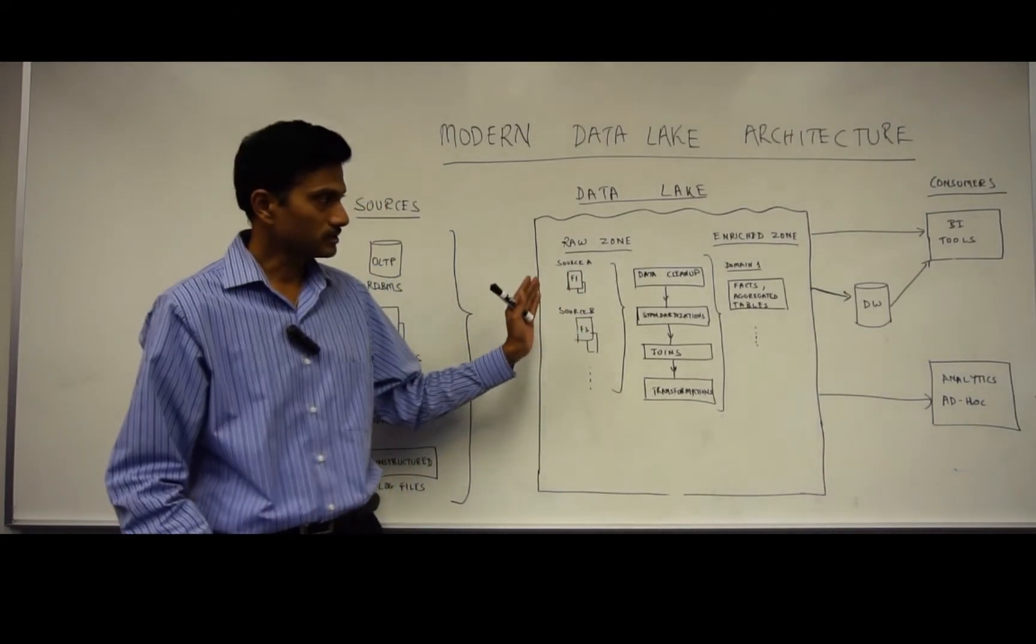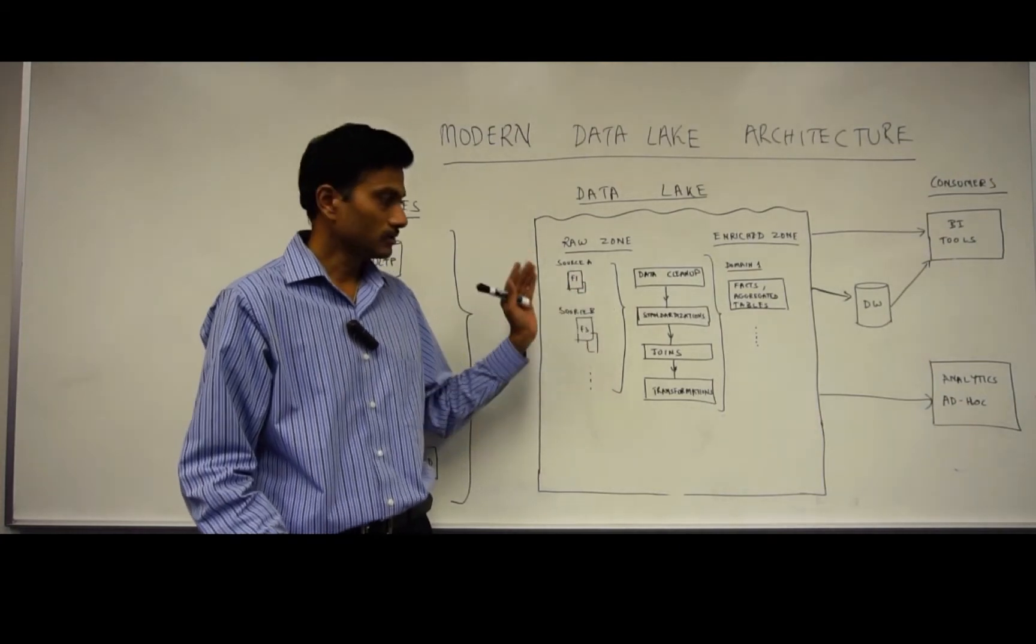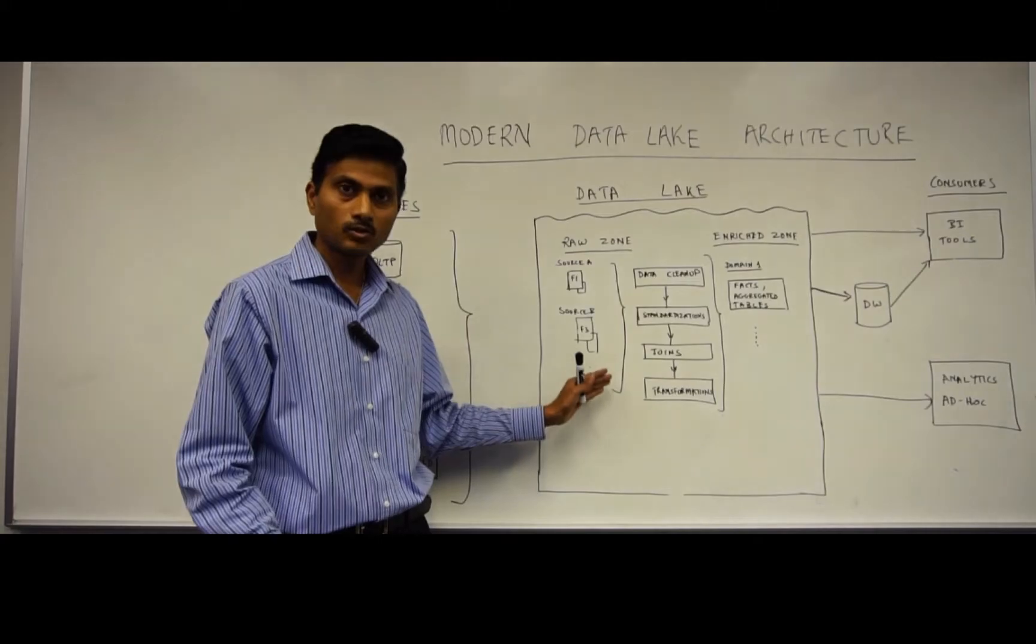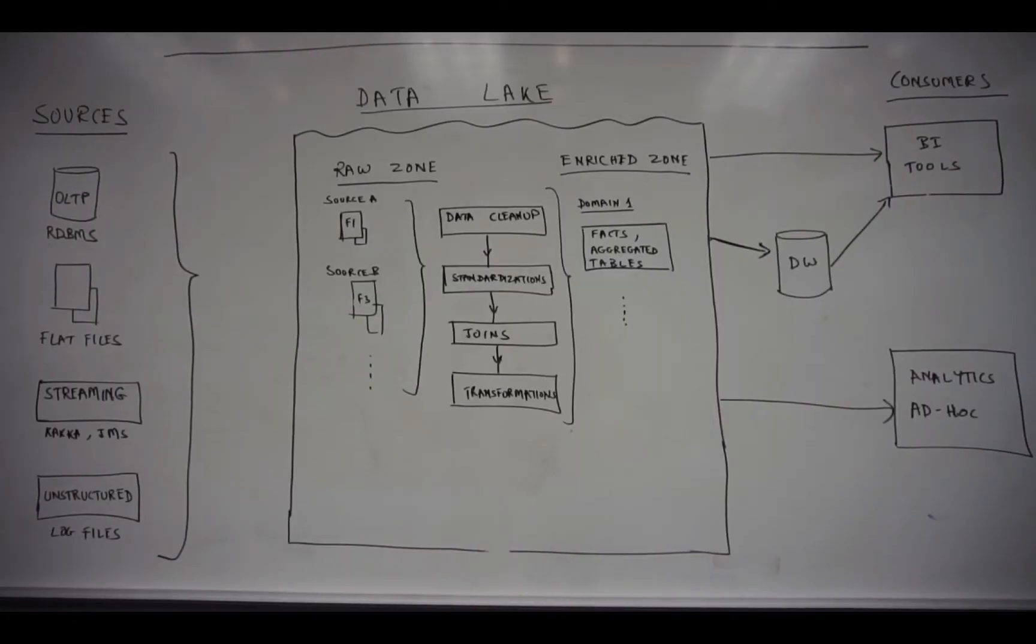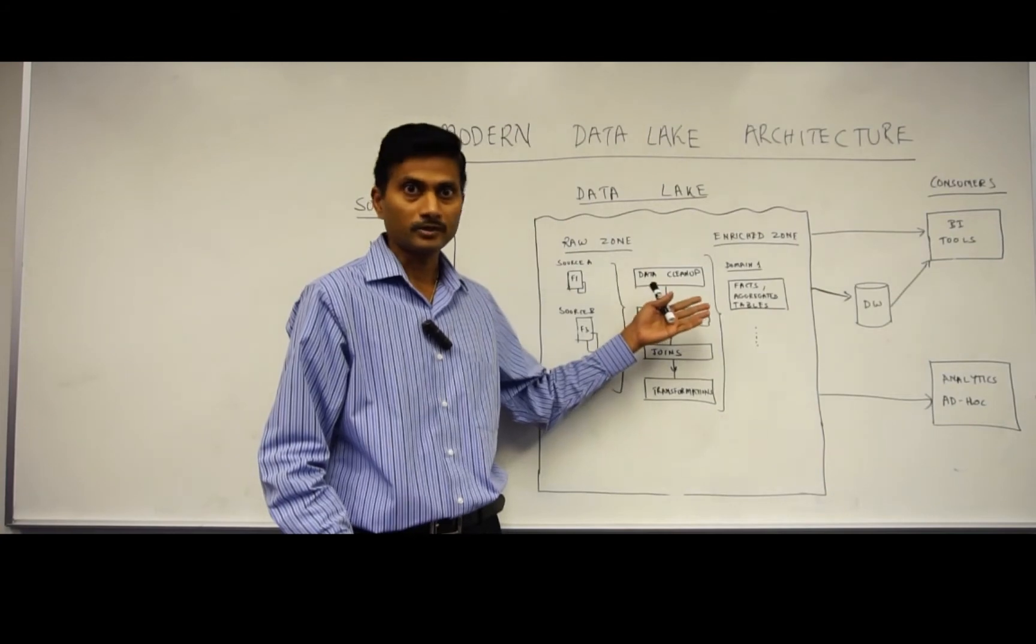Then, the transformations that include the data cleanup, data standardizations, joins, lookups, as well as other transformations required are done, and data is then moved to what's known as the enriched zone. Enriched zones can be organized by different domains, as appropriate.